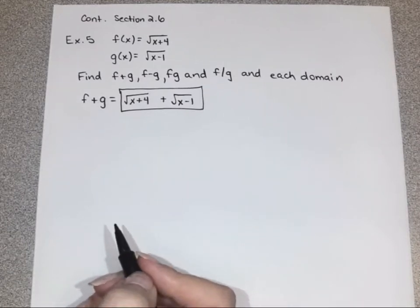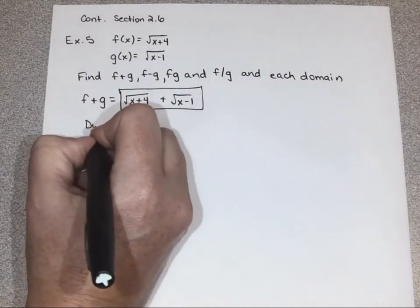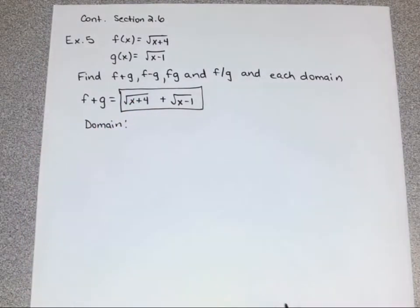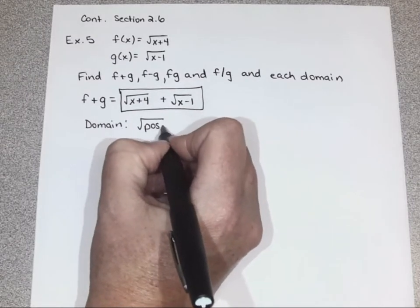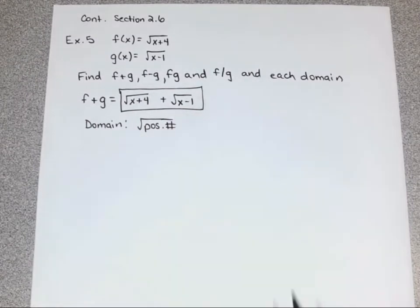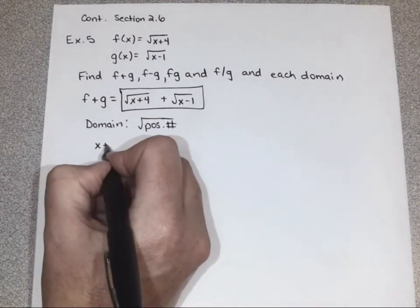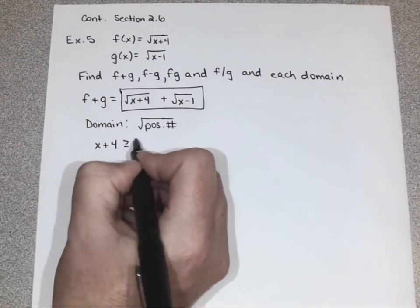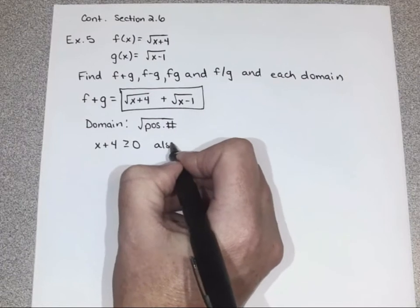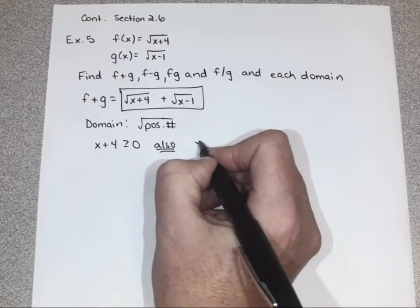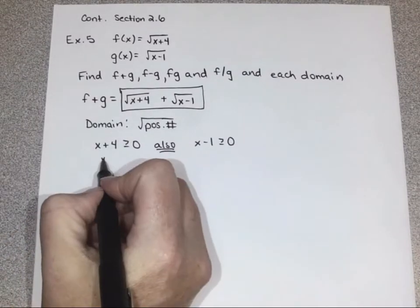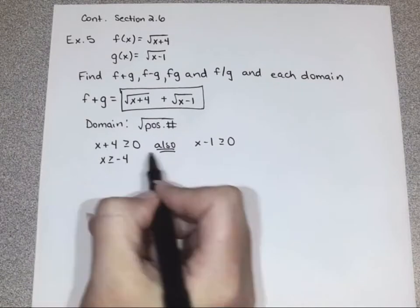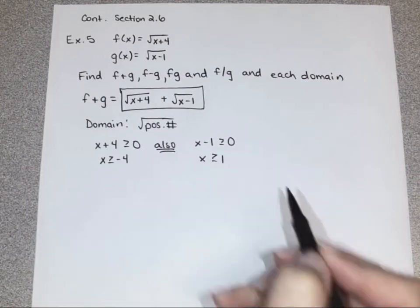But when we have to come up with the domain, it's a little bit strange here. So what's the issue with the domain? We want to make sure that we're only taking the square root of positive numbers. So we have that we want x plus 4 to be greater than or equal to 0. But we also have a second root, and we want to make sure that is greater than or equal to 0. So if you solve for both of these, if you subtract 4, you'll get x is greater than or equal to negative 4. Here you'll get x is greater than or equal to 1.